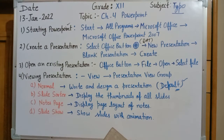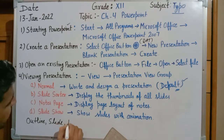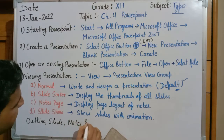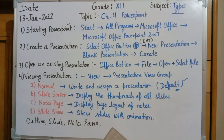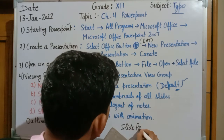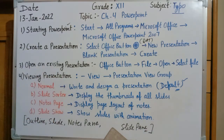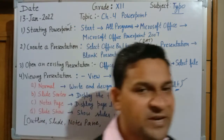Normal view contains four types of working areas: first is the Outline tab, second is the Slide tab, third is the Notes Pane, and fourth is the Slide Pane where a user can do slide editing. The Slide Pane option is available in Normal view.